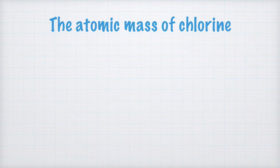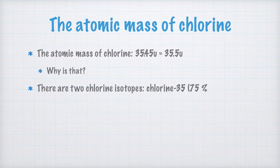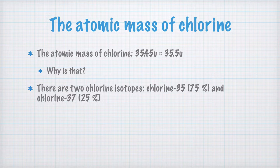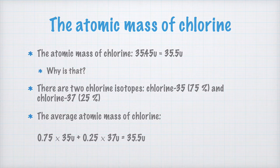Let's look closer at the atomic mass of chlorine. Its atomic mass is 35.453U, which is approximately 35.5U. This is because of the two chlorine isotopes: chlorine-35 makes up about 75% of all chlorine atoms, and chlorine-37 makes up about 25% of all chlorine atoms. This leads to the average atomic mass: 0.75 times 35U plus 0.25 times 37U, which is equal to 35.5U.